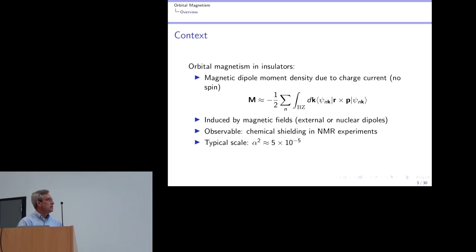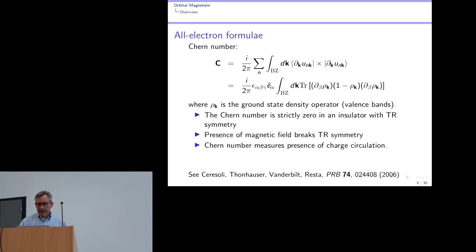So that leads to what's now referred to as the modern theory of magnetization, which is not dissimilar from the modern theory of polarization. You can look at related quantities like the Chern number. And that's now, this times here is curl. Okay, so this is a vector product. And so the Chern number effectively is the curl of the derivative of the wave functions, which you can recast in terms of density operators as basically the curl. Notice the epsilon alpha beta gamma.